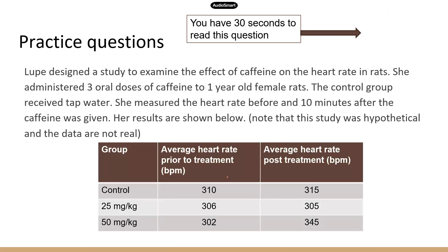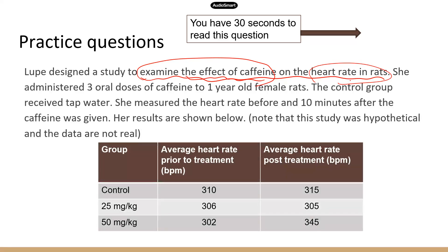Background about the experiment: Lupe designed a study to examine the effect of caffeine on the heart rate in rats. This sentence gives you a lot of important information. Lupe is looking at the effect of caffeine — this is the factor she's going to manipulate — to see if there is any impact on the test animals, and the outcome is the heart rate in rats. She has three doses of caffeine administered to one-year-old female rats.